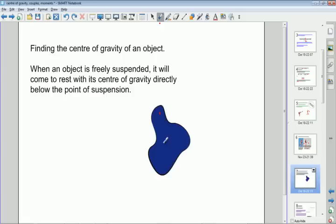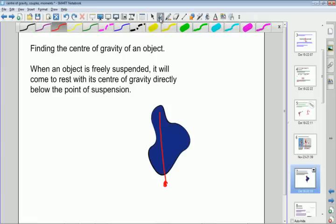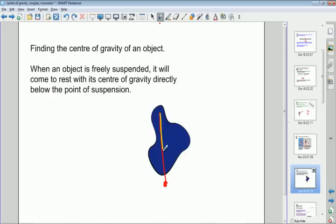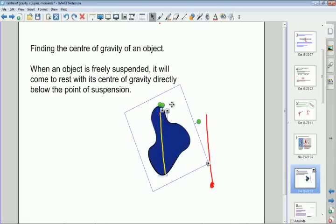And then we would use a plumb line, so we would have a vertical line that goes through the object with a weight on the end, maybe a string, a piece of cotton thread with the plumb line on it. And we would actually draw a line along the line that goes vertically down from the point of suspension. So we would have a line on the object.